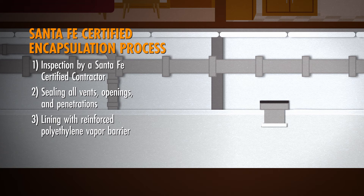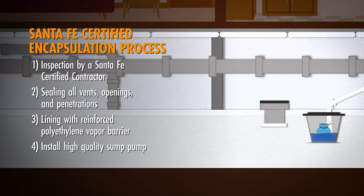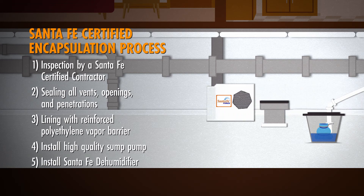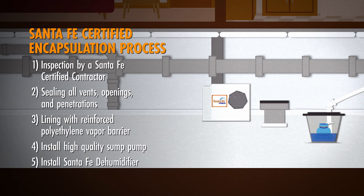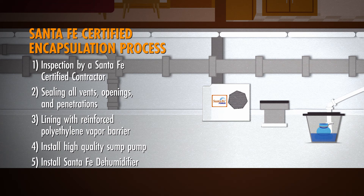A high-quality sump pump is then installed if the space has a history or chance of flooding or standing water. Finally, an energy-efficient, industry-leading Santa Fe dehumidifier is installed to reduce humidity and help make the crawlspace less hospitable for fungi, insects and other contaminants that could lead to poor indoor air quality.